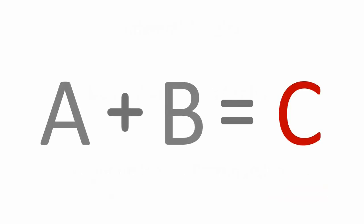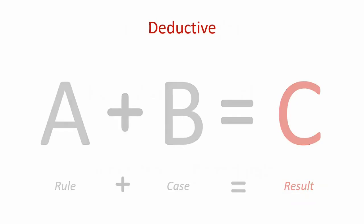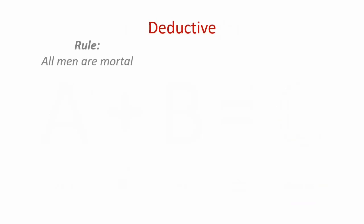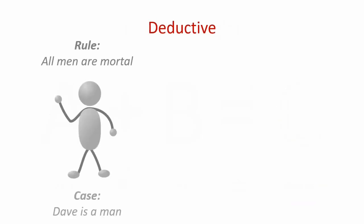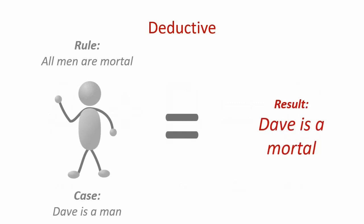Let's see what A plus B equals C means in a research study that focuses on the deductive approach. A is your rule, B your case, and C your result. For example, the rule is that all men are mortal. This is Dave. Dave is a man. Since Dave is a man and all men are mortal, we can make an inference that Dave is mortal. I love saying the word mortal — makes me sound Scottish.